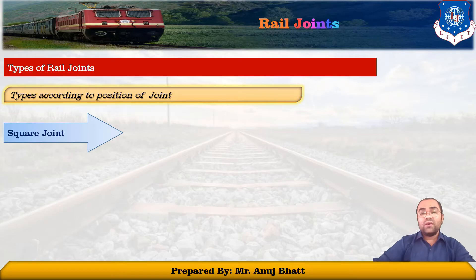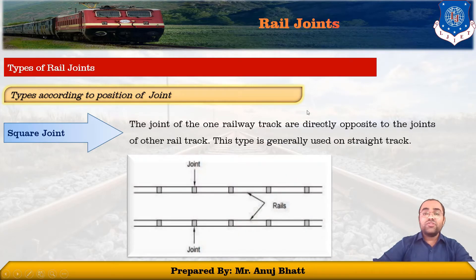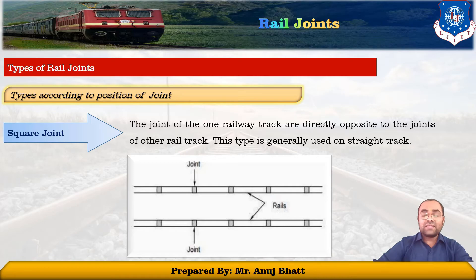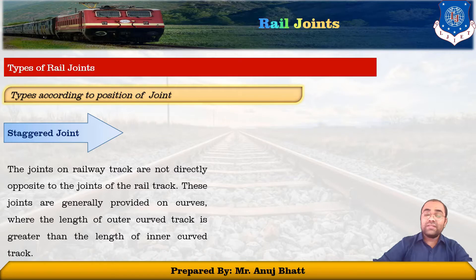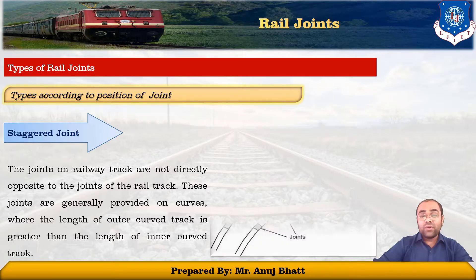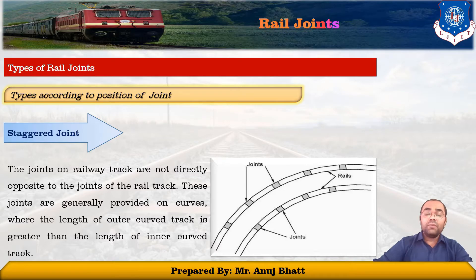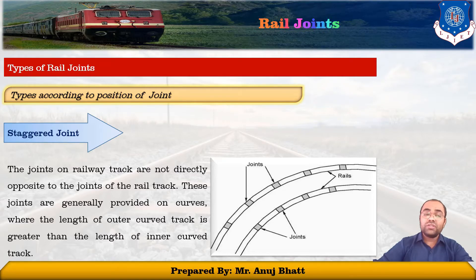The next type is the type of rail joints according to the position of the joints. The first is the square joint, wherein the joints in one rail are exactly opposite to the joints in the other rail. The second is the staggered joint, while in the staggered joint, joints in one rail are staggered and are not opposite to the joints in the other rail. Staggered joints are normally preferred on curved tracks because they face the centrifugal force that pushes the track in the outward direction.